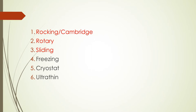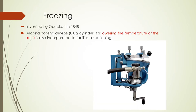Next we have the freezing microtome. It was invented by Queket in 1848. As the name suggests, it involves a secondary cooling device — usually a carbon dioxide cylinder — for lowering the temperature of the knife. Take note of the phrase 'lowering the temperature of the knife,' because we're going to distinguish it from the cryostat, which we'll tackle now.